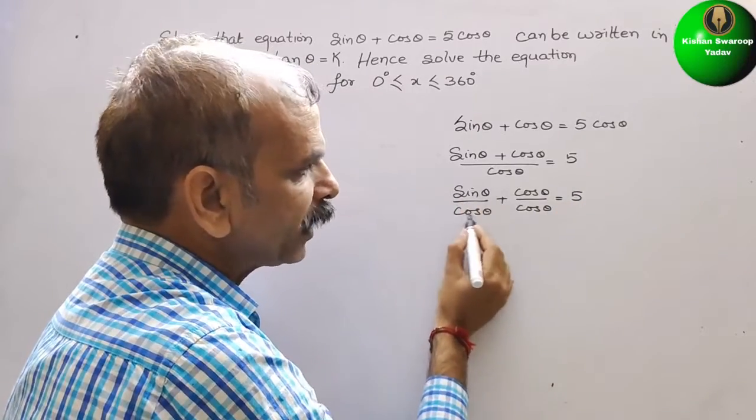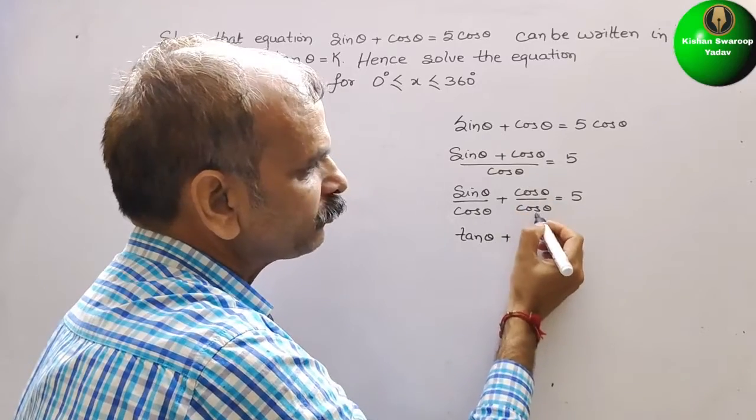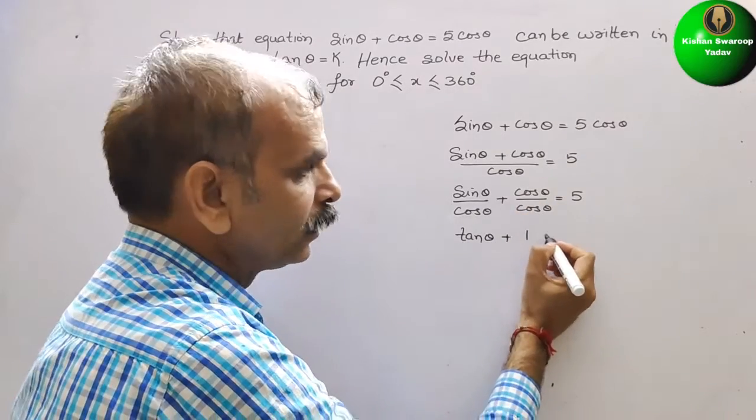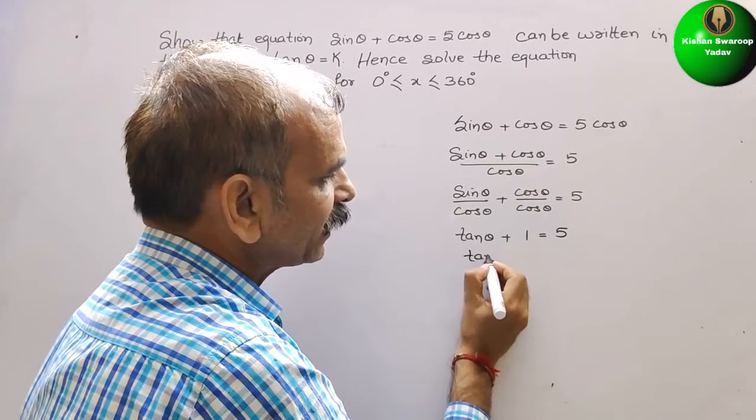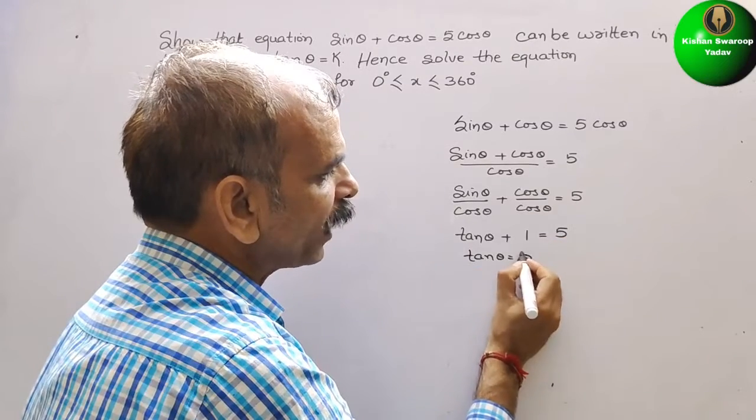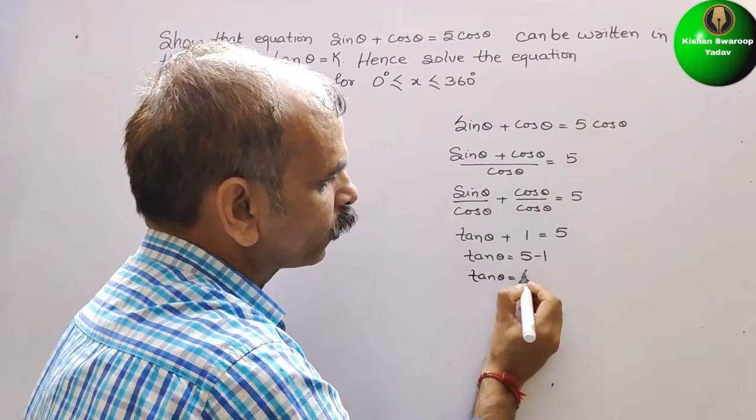So, this will become tan theta plus this will become 1, that equals 5. So, now we can say tan theta equals 5 minus 1. So, now tan theta is 4.